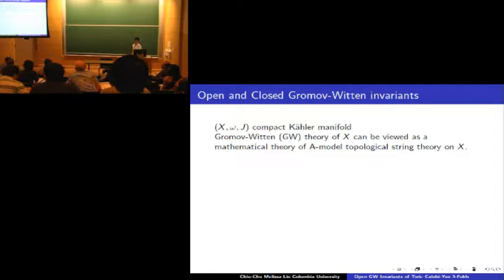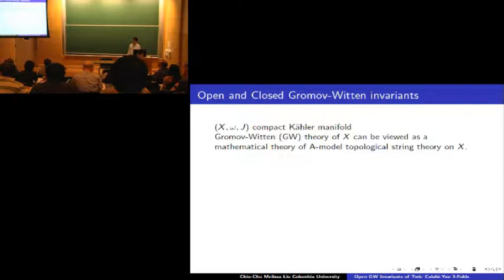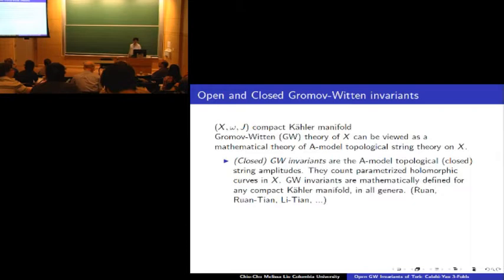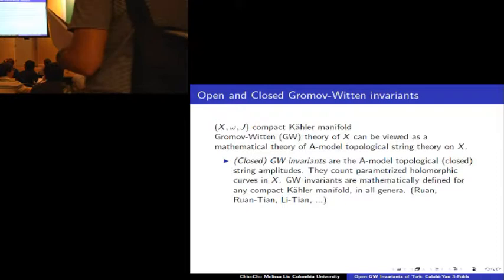Let (X, omega, J) be a compact symplectic manifold. Gromov-Witten theory of X can be viewed as a mathematical theory of A-model topological string theory on X, and you have heard about this a lot so far. Gromov-Witten invariants are A-model topological closed string amplitudes. They count parametrized holomorphic curves in X.